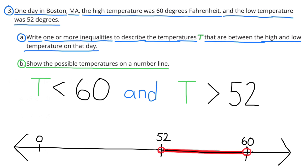Part B: Show the possible temperatures on a number line. I drew a number line and I have an open circle underneath 52 and an open circle underneath 60, with a red line between the two, to show the temperatures that are between 52 and 60, not including 52 and 60.